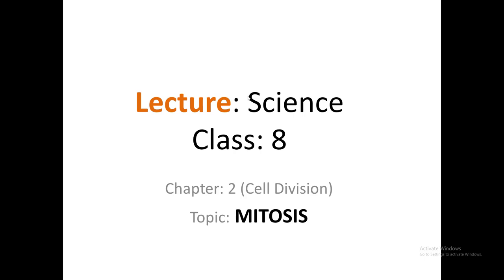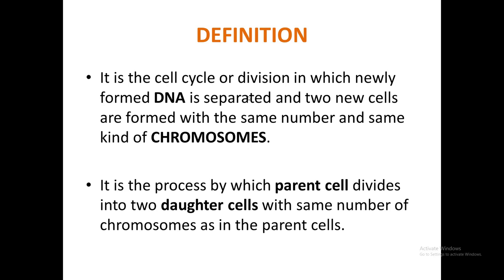This division is called cell division. Cell division is a process by which a parent cell divides into two daughter cells. The daughter cells produced will have the same number of chromosomes and the same nature as the parent cell.